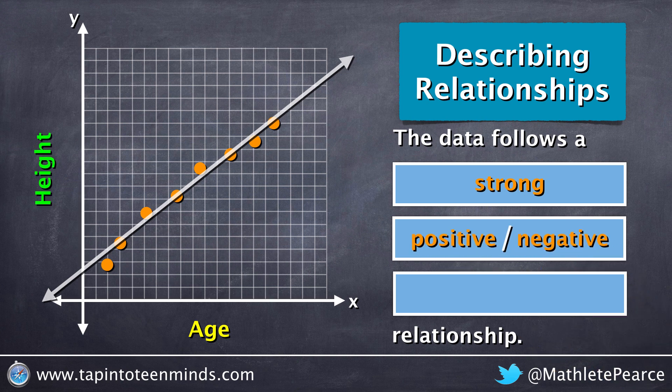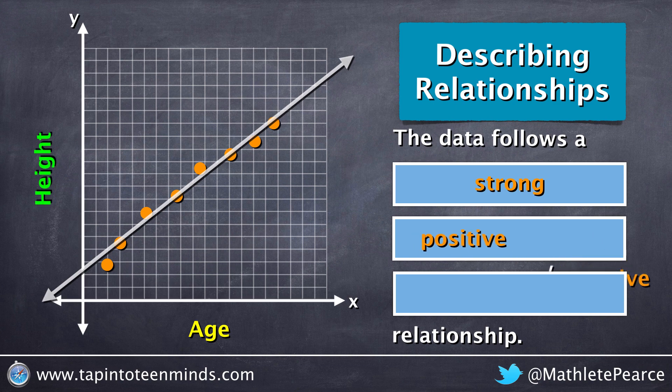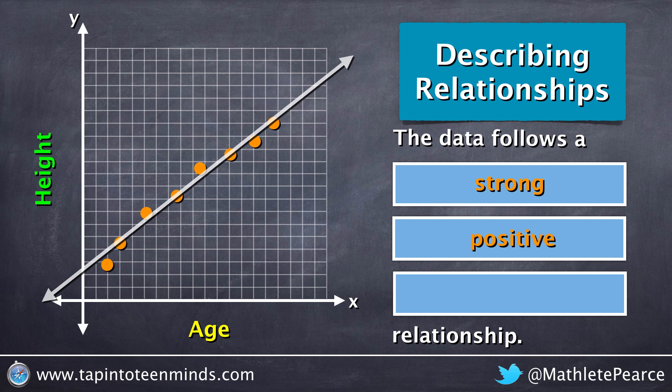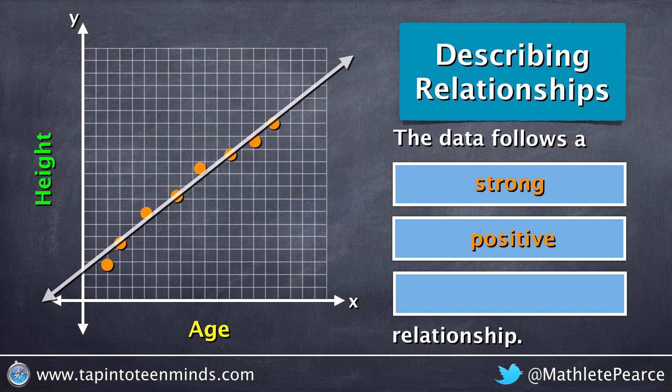We can then also speak in terms of positive or negative. If rising to the right, we suggest it's a positive trend. If it's falling to the right, it would be a negative trend. So in this case, we have a positive relationship.